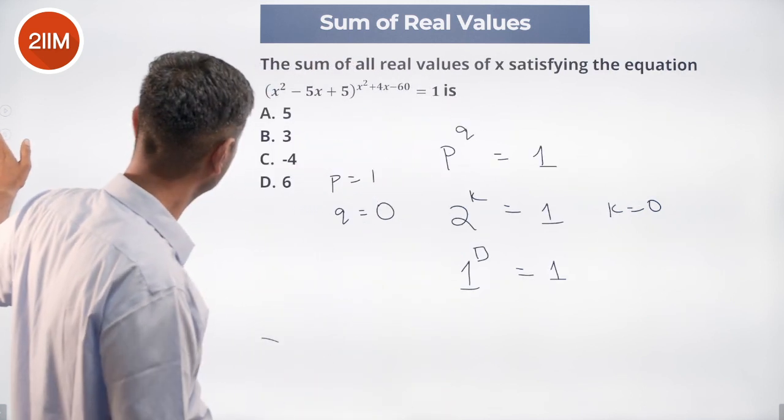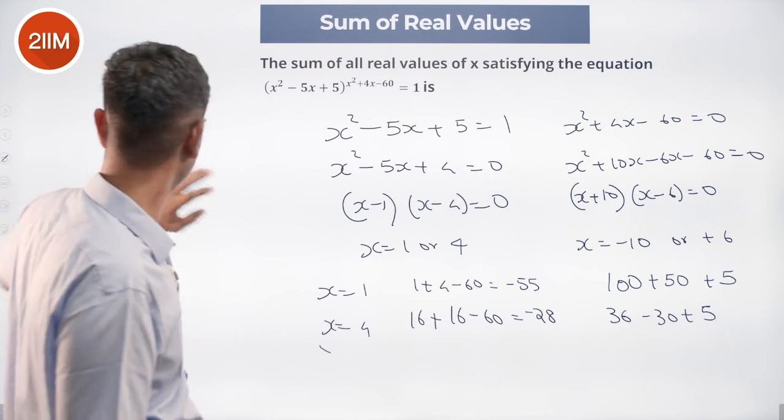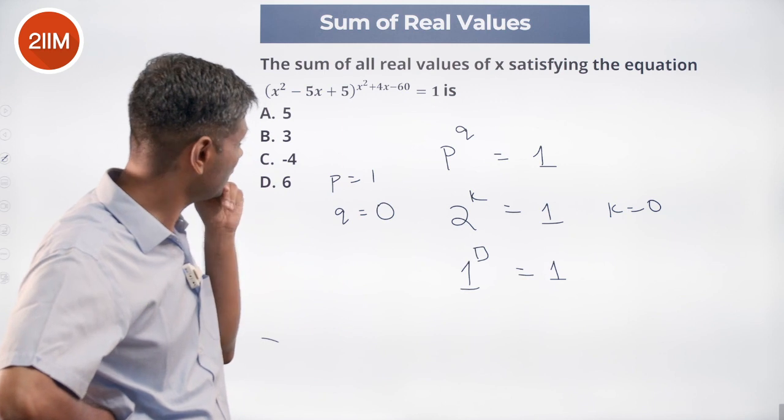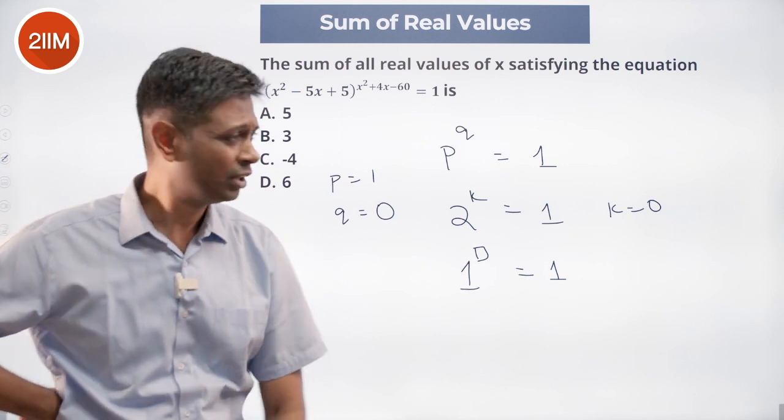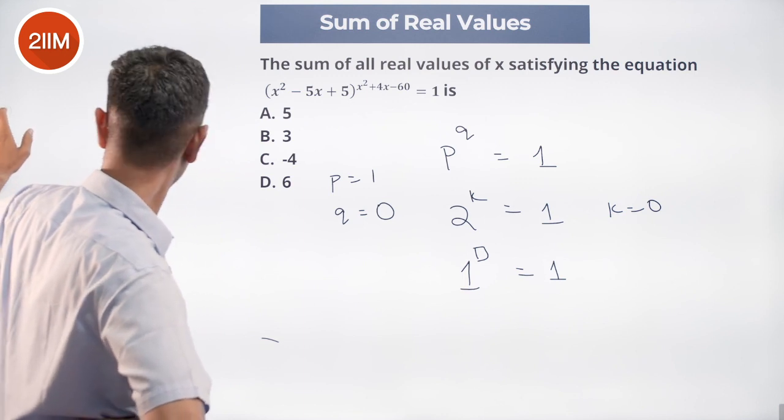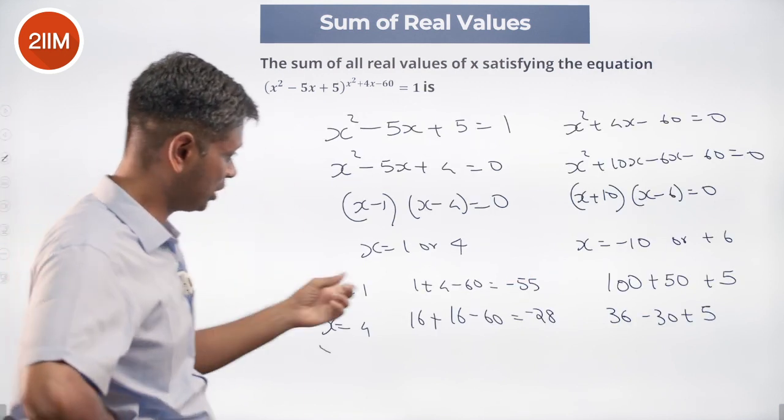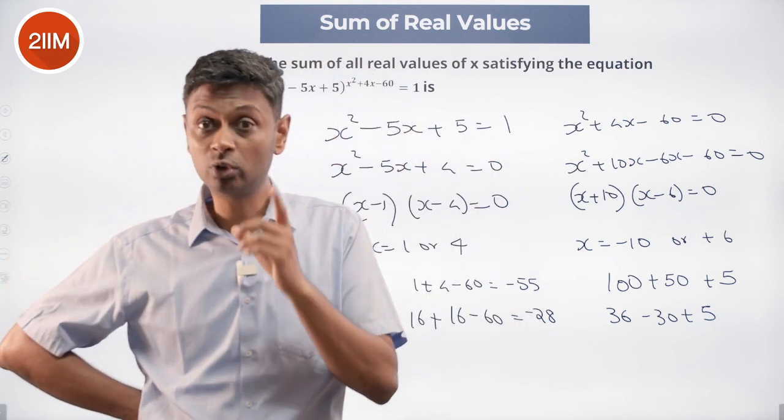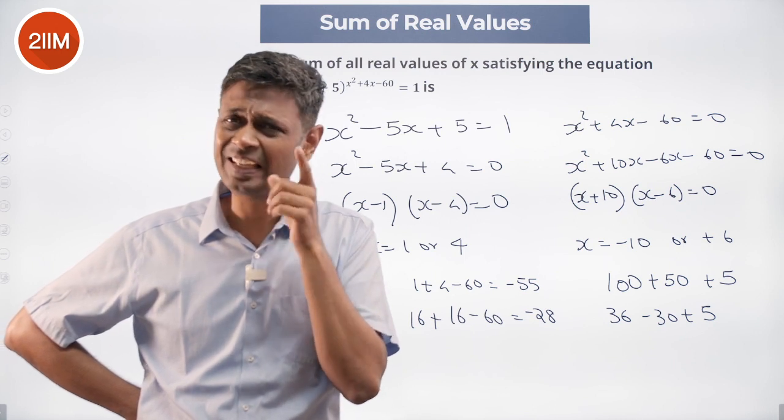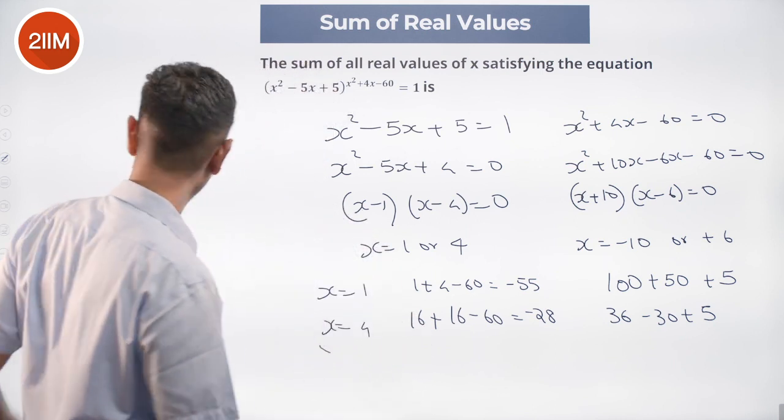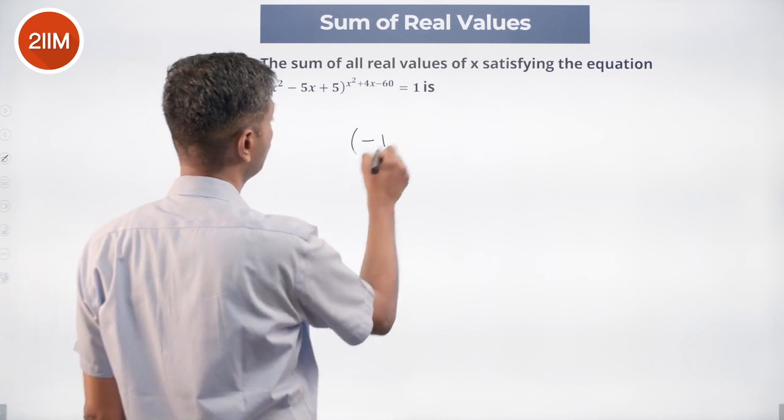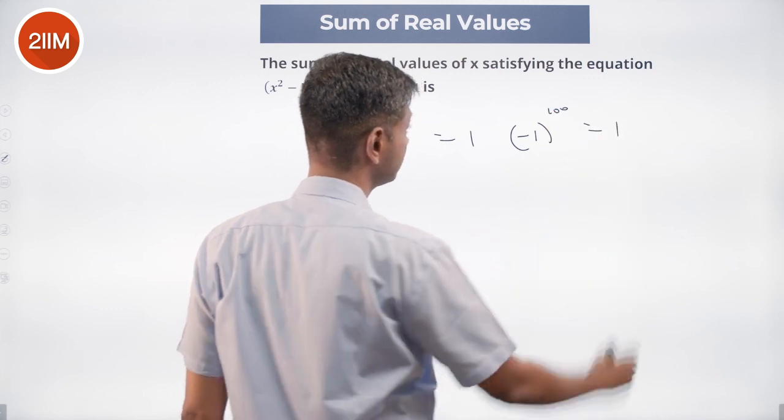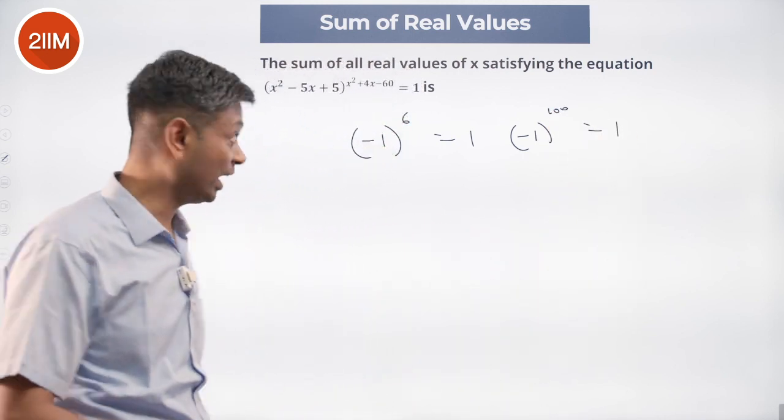But there is no 1 here, so we missed a trick. We should probably include -1. So interesting, what is the thing that is going on here, what are we missing out on? The values we have got for x that work are 1 or 4, minus 10 or 6. What p power q equals 1? q could be 0, p could be 1. Anything else that is possible? You could have a wonderful mechanism where minus 1 power 6 is 1, minus 1 power 100 is 1. We will have to now say, hey, nice.